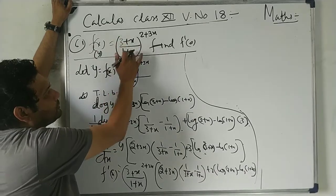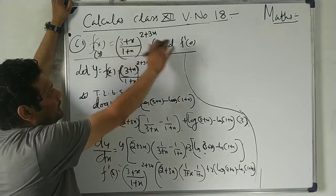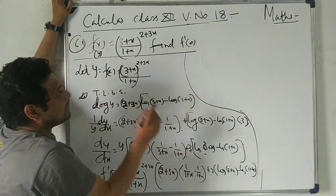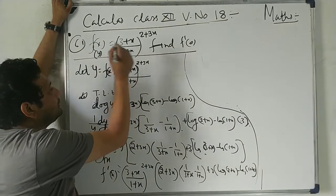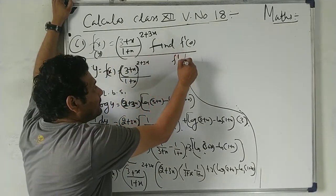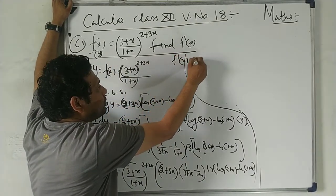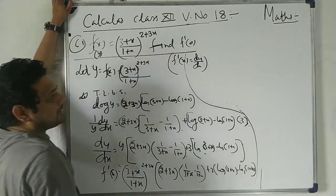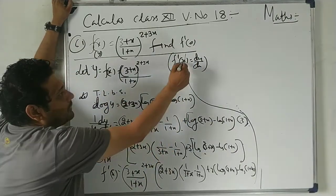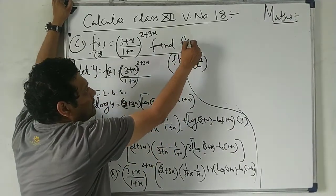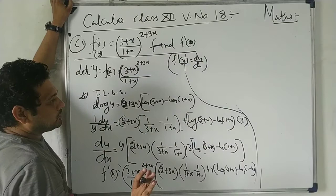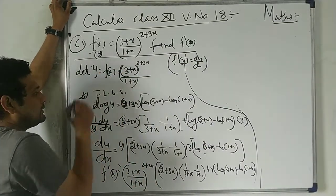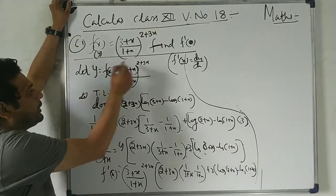The function is f(x) = (3+x)^(1+x)^(2+3x) and we have to find f'(0). f'(x) means dy/dx, and at the last step we put x = 0. So first, we take log both sides to simplify: log y equals the expression.